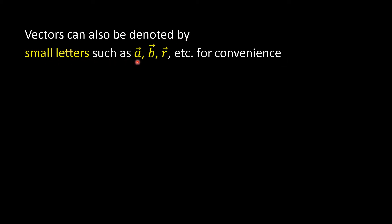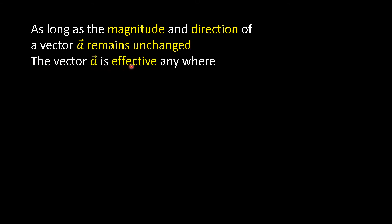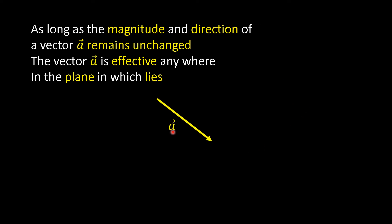Vectors can also be denoted by small letters such as A-bar, B-bar, R-bar, etc., for convenience. As long as the magnitude and direction of a vector A-bar remain unchanged, the vector A-bar is effective anywhere in the plane in which it lies — it is effective here, here, and here, as long as its magnitude and direction do not change.